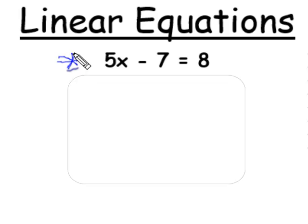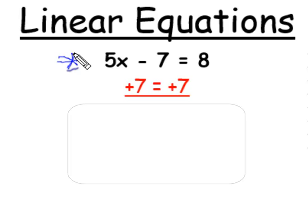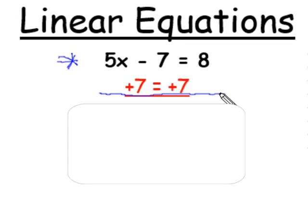We will follow the usual algebraic steps to solve this equation. To begin with, add 7 to both numbers: 5x minus 7 and 8. Adding 7 to these two numbers will give us 5x for 5x minus 7 plus 7, and 15 for 8 plus 7.